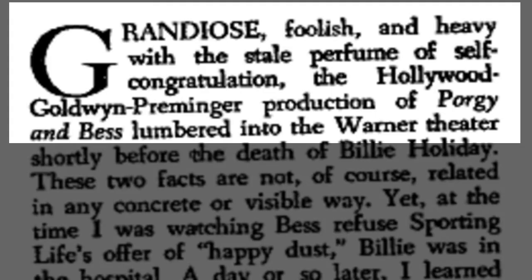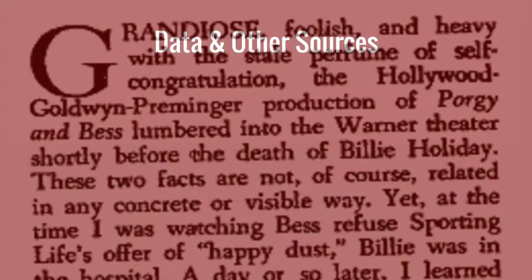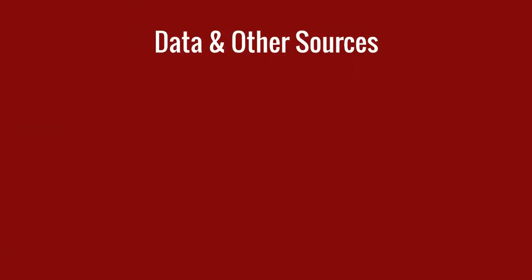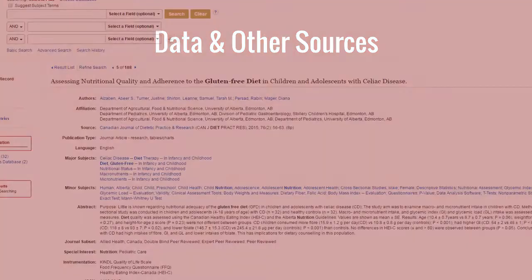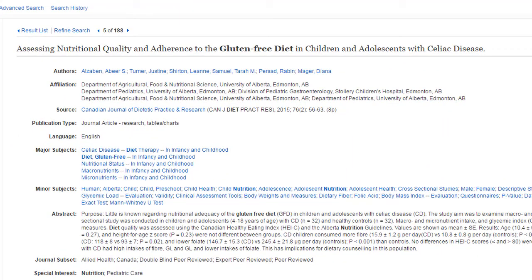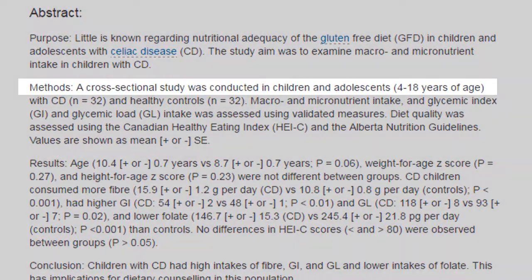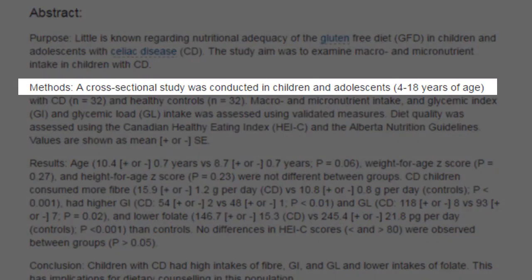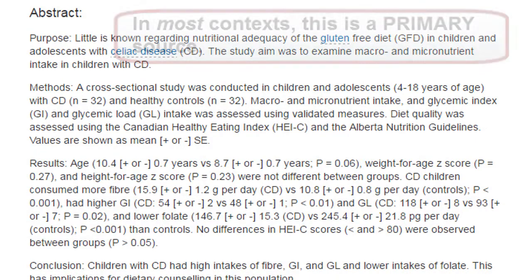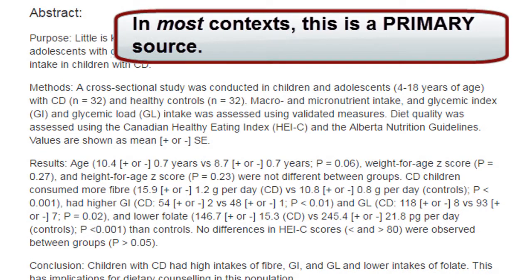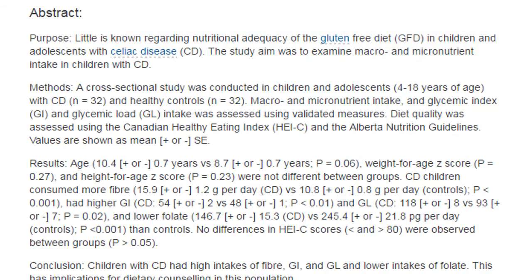Usually, the distinction between primary and secondary sources is clear. For example, in preparing this article on the gluten-free diet, the authors themselves collected the data. For this reason, most would consider it a primary source. However, scientists may think differently about such studies. When in doubt, consult your professor.